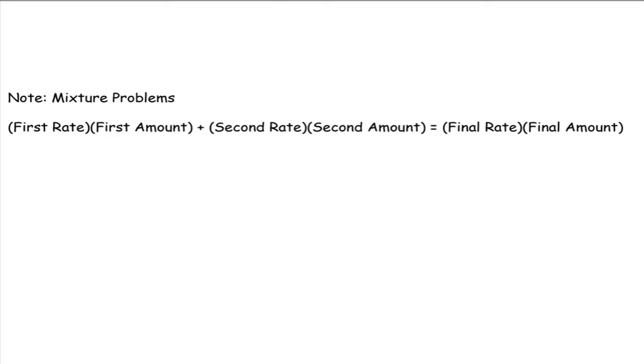Mixture problems. Typically for this example here, we're going to have like two things we're mixing together. And so we take the first rate and the first amount and multiply those two things together. Now, rate would be like the percentages, like 7% alcohol solution or say dollar amounts. You know, it's five bucks a pound, then the rate would be the dollar amount, the five bucks.